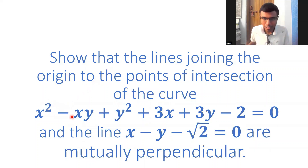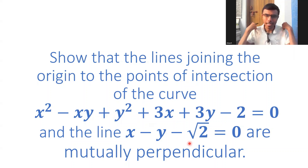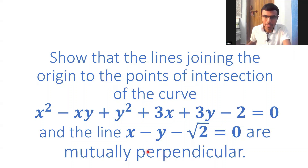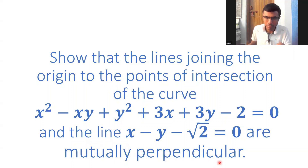Here, basically, we are given a curve and we are given a straight line. I'm going to homogenize this curve with respect to this straight line and solve it. Ultimately, I'll be getting an equation of a pair of straight lines. With that, I'm going to show that that pair of straight lines are perpendicular.